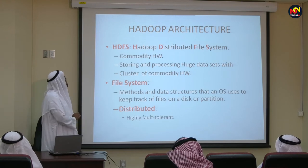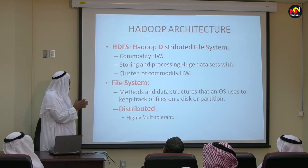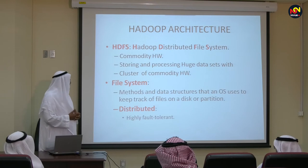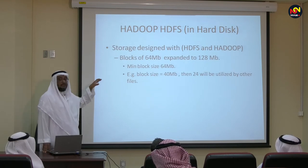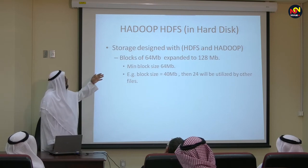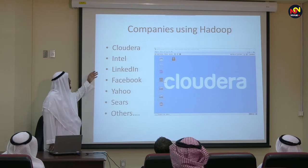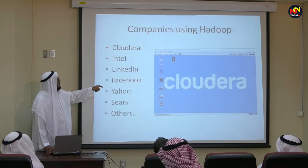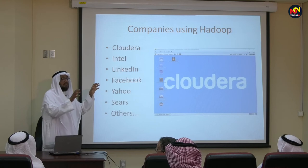Hadoop Distributed File System works on commodity hardware for storing and processing large amounts of data. The file system uses methods and data structures that the operating system uses to keep track of files on disk. Since data is now in partitions, we need to really manage this data well — in a distributed and highly fault-tolerant manner. The minimum block size when you store data in cluster nodes or data nodes is 64 megabytes, but you can expand to 128 megabytes. Big companies like Cisco and Yahoo use these tools. You will find Hive, ZooKeeper, MapReduce, YARN — all of these tools are there.